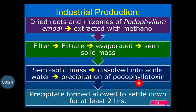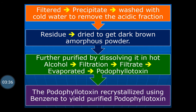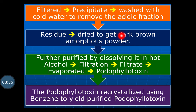The precipitate which is formed is allowed to settle for 2 hours so that it settles to the bottom of the container. It is then filtered to separate the precipitate, and the precipitate is washed with cold water to remove the acidic fraction. The residue obtained is dried to get a dark brown amorphous powder.